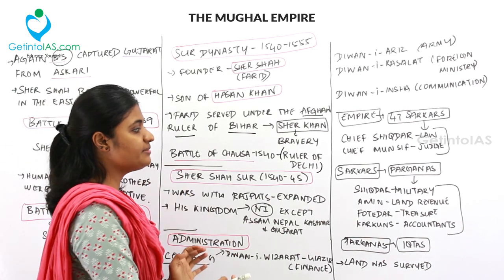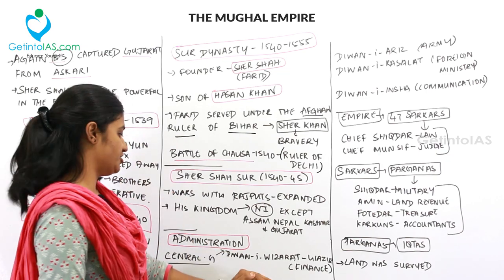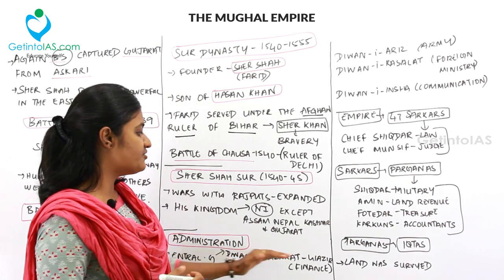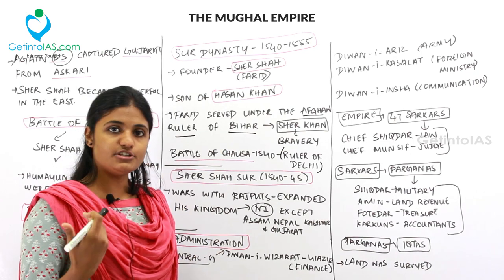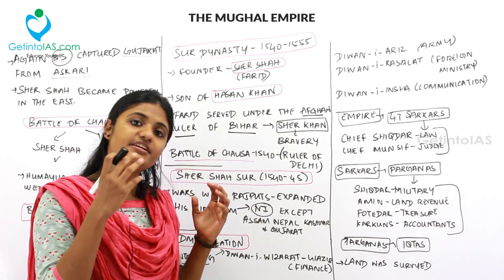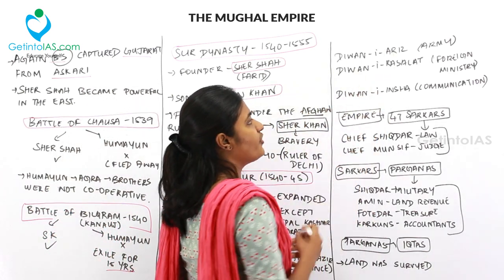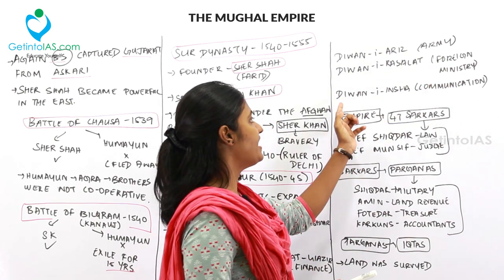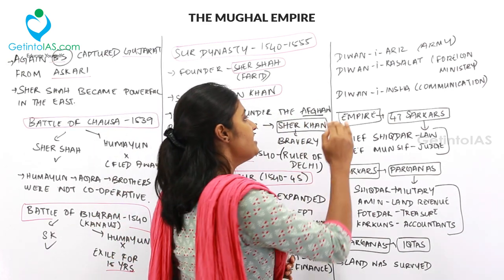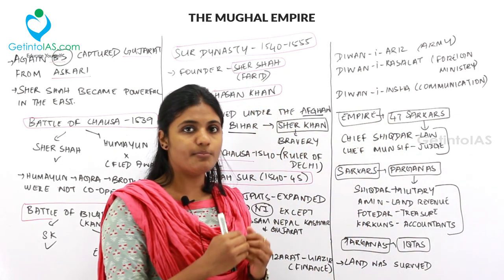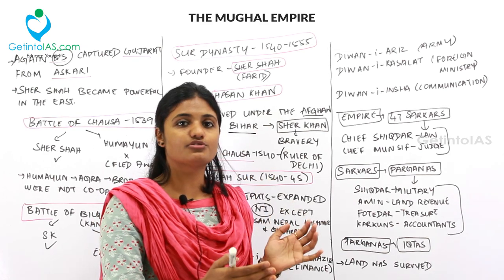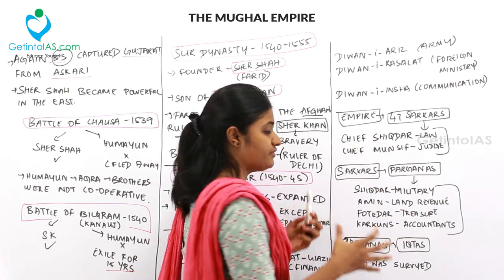Sher Shah's administration was outstanding. He divided the central government into departments: Diwan-e-Vizarat for the Vazir or Prime Minister handling revenue and finance, Diwan-e-Arz for the army, Diwan-e-Rasalat for foreign affairs, and Diwan-e-Insha for communications. His empire was divided into 47 sarkars, further divided into parganas and smaller units called iktas.